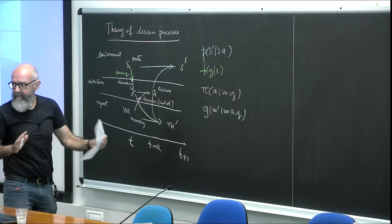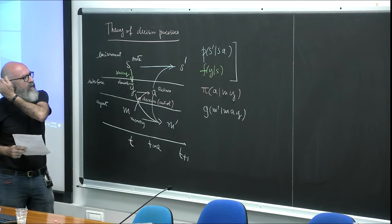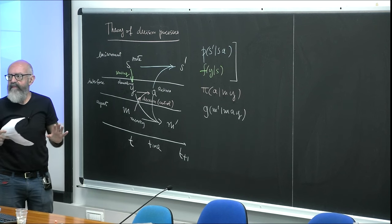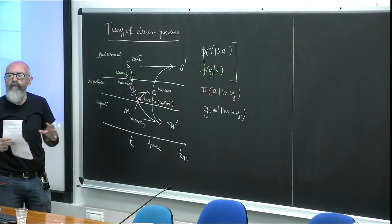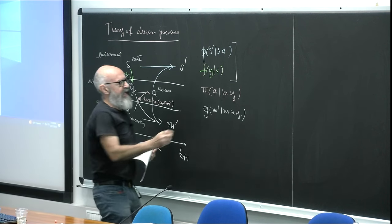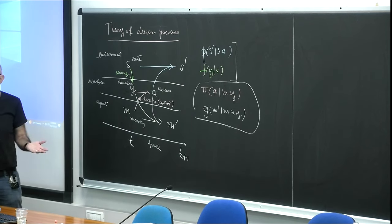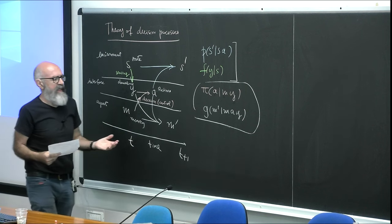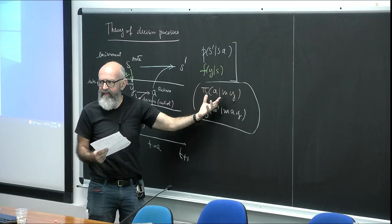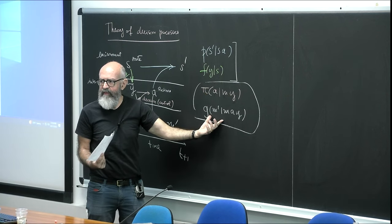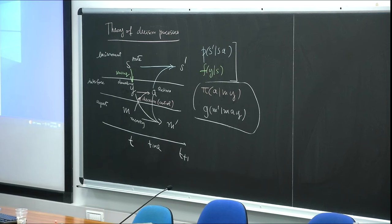In general, there is a distinction between the transition probability — typically assumed to be a property of the external environment not under the agent's control — and the parts where the agent can perform optimization: how I decide things, and how I process the information I receive, in order to optimize a certain goal. This is the first important fork: there are two different approaches.